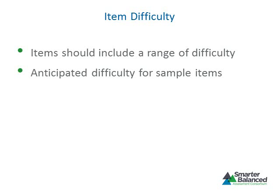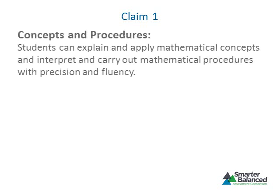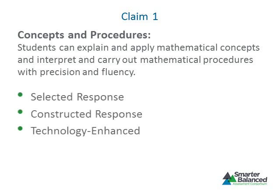Let's examine the claims and assessment targets contained in the Smarter Balanced Assessment Consortium Mathematics Content Specifications. For mathematics, there are four claims. Claim 1 focuses on concepts and procedures and requires students to explain and apply mathematical concepts and interpret and carry out mathematical procedures with precision and fluency. The focus is on content knowledge learned at the grade level being assessed. A variety of item types are used to collect evidence for Claim 1, including Selected Response, Constructed Response, and Technology-enhanced items and tasks that focus on a particular skill or concept.